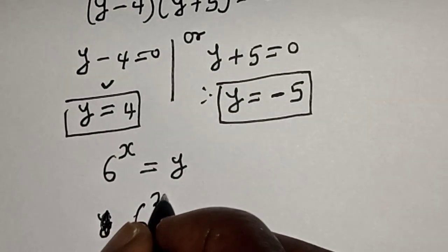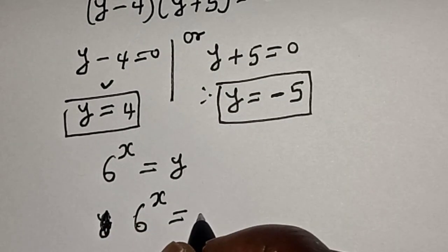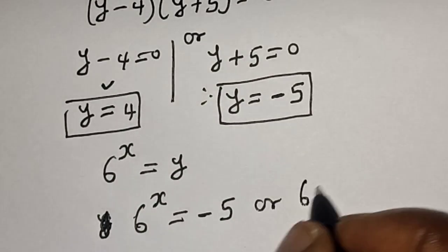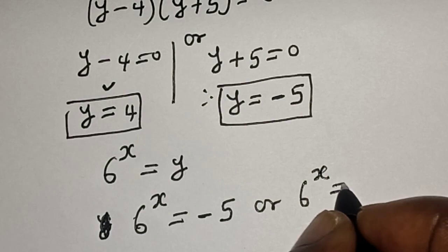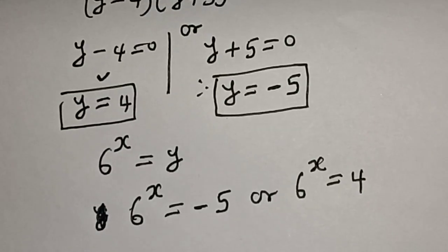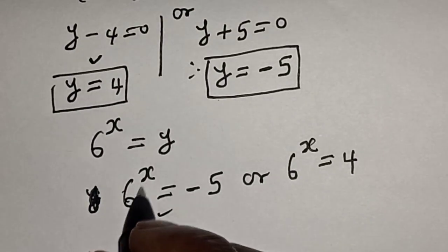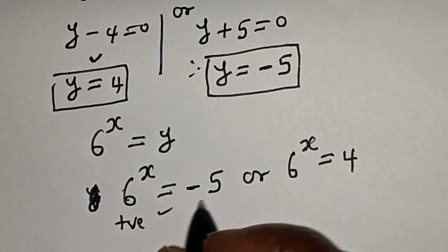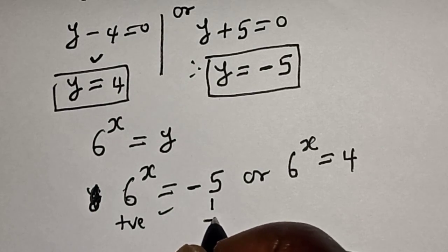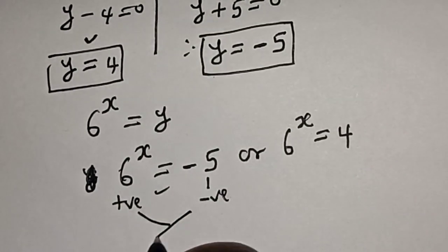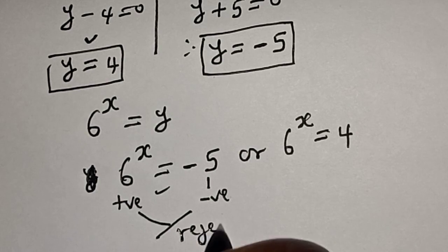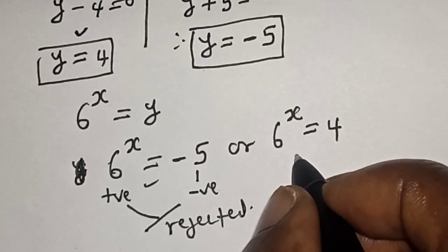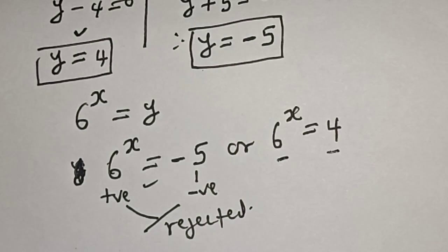Remember that we said 6 raised to power s is equal to y. So either 6 raised to power s equals negative 5, or 6 raised to power s equals 4. Since 6 raised to power s cannot be negative — this side is positive and that is negative — the case y equals negative 5 is rejected. The only valid solution is 6 raised to power s equals 4.